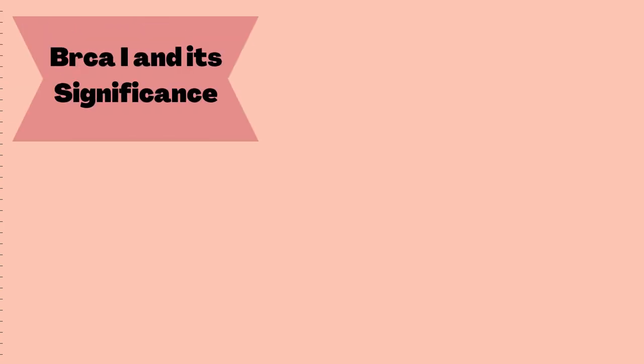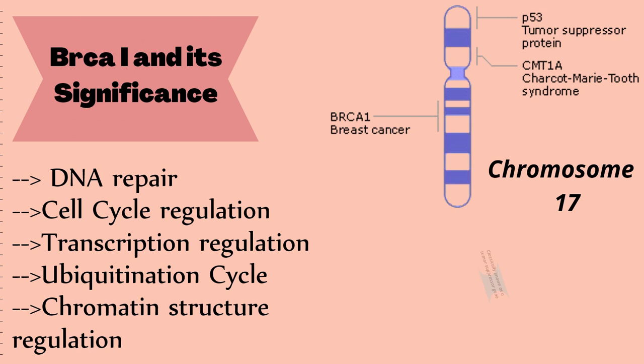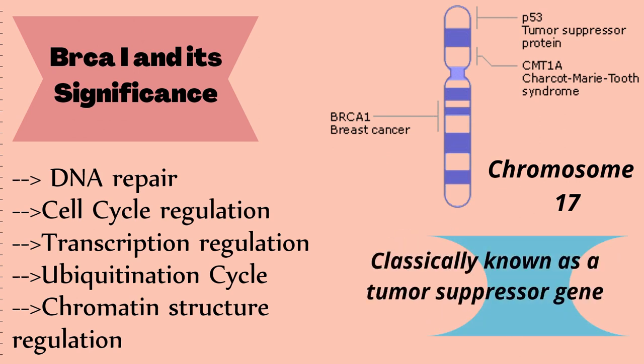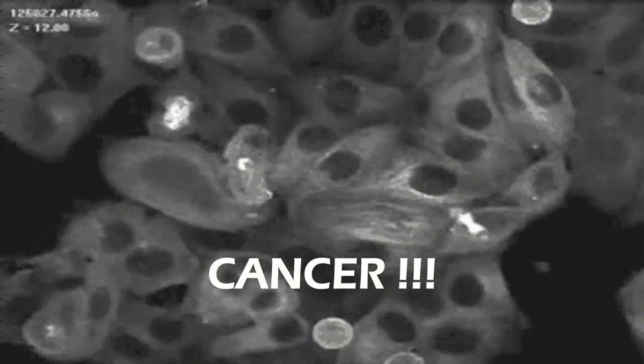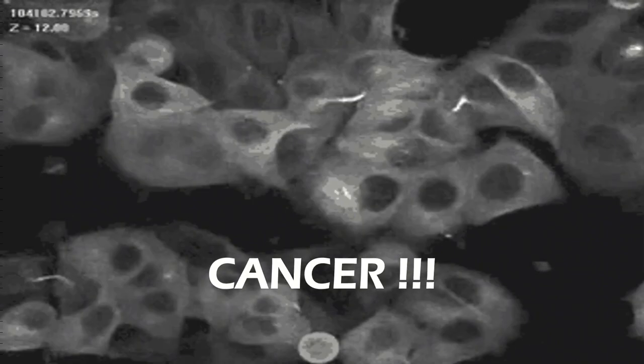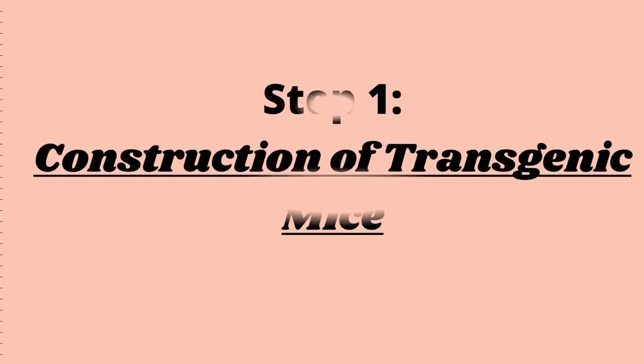Now that we have covered the Cre-lox P system, let's understand the role of the mammalian BRCA1 gene. BRCA1 is a gene located on chromosome 17. It carries out a variety of functions such as regulation of the cell cycle, repairing DNA, and so on. It is, however, mainly known as a tumor suppressor gene. By that logic, mutation or dysfunction in a tumor suppressor gene will cause cancer — in this case, mainly breast cancer. So, in order to study breast cancer in mice, we first have to construct BRCA1 conditional knockout transgenic mice.